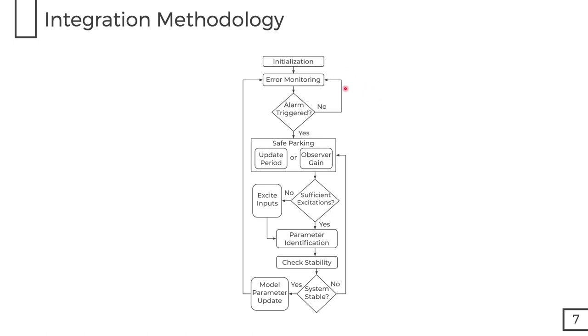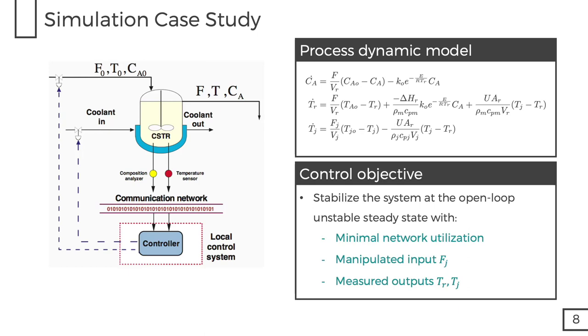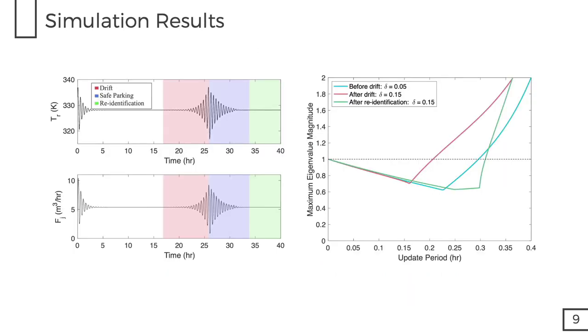After initialization, we continuously monitor the system for possible destabilizing drifts. If an alarm is triggered, then a safe parking protocol takes place, in which the system is temporarily stabilized to collect data for identification. The data collected is checked for sufficient excitation, and when new model parameters are re-identified, they are checked for stability before model parameters are updated. In this study, we consider a CSTR with an irreversible elementary reaction. The process dynamics of the system can be described by the following equations. The control objective is to stabilize the system at the open loop unstable steady state with minimal network utilization.